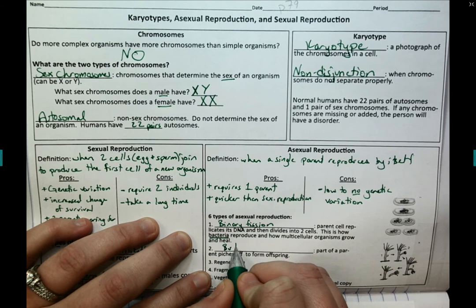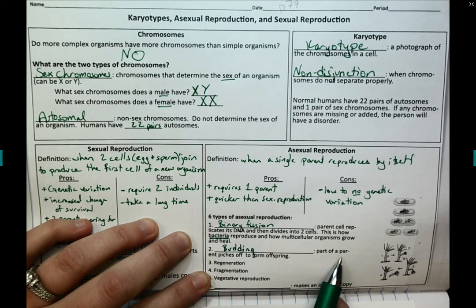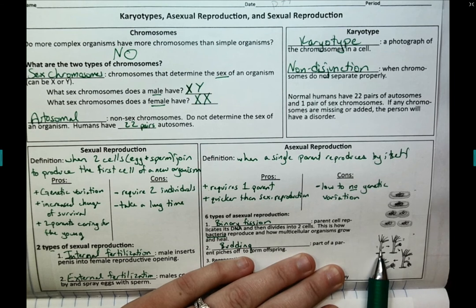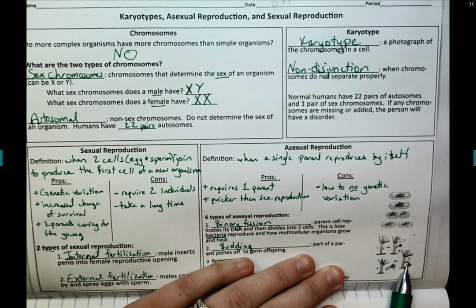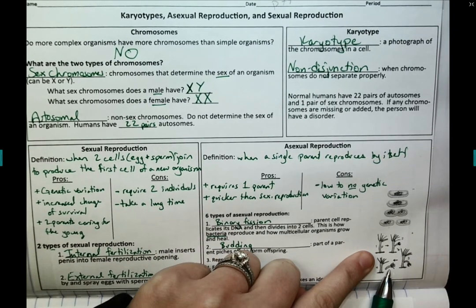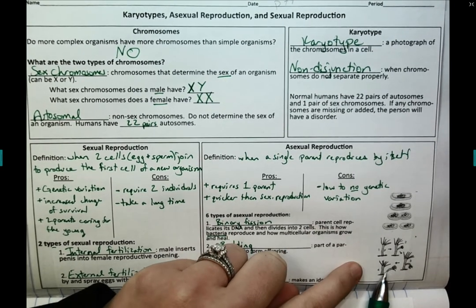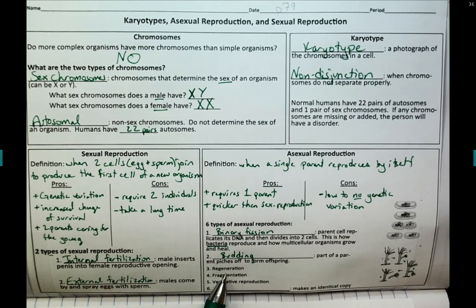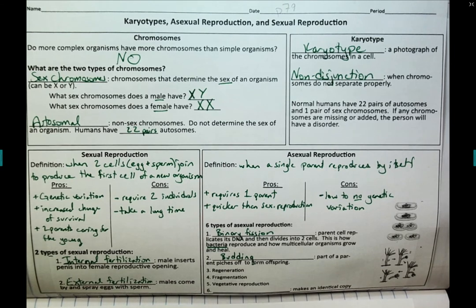The second type of asexual reproduction is budding, where part of the parent pinches off to form offspring. We have a hydra here — the parent organism develops a little nub that keeps growing until eventually it falls off, and now we have the original parent and a new hydra. The offspring is basically identical to the parent, so we have very little to no genetic variation, but it was pretty quick. Regeneration is very similar to budding — if a sea star loses an arm, it could regrow that arm, or the arm could potentially regrow the rest of the organism.